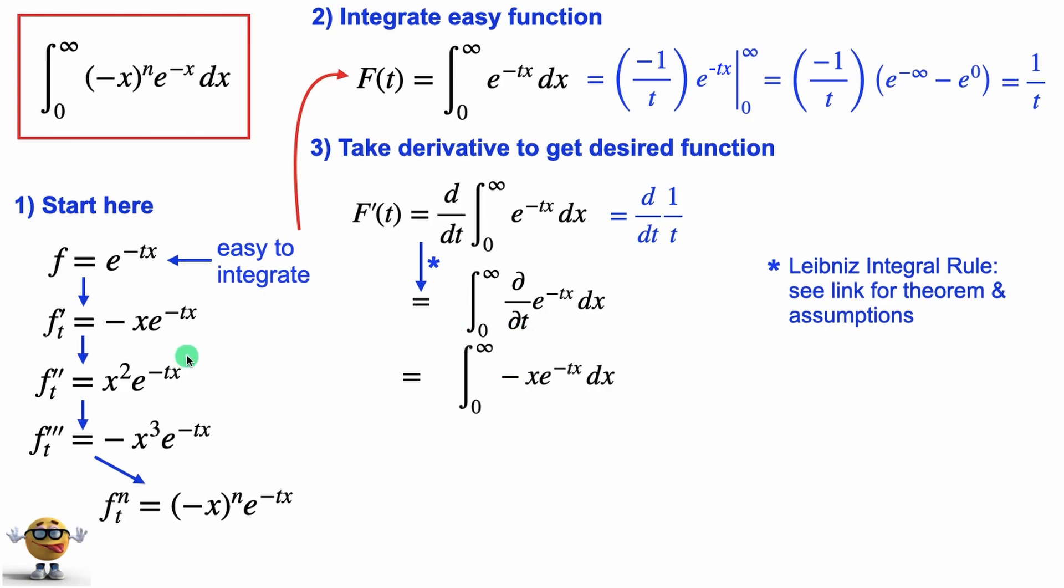Okay, so that partial derivative we've already done over here on the left. That's negative x e^(-tx). And the derivative with respect to 1 over t is, again, this is a nice friendly function to differentiate, negative 1 over t².